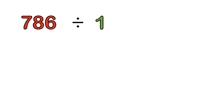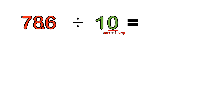Let's look at another example: 786 divided by 10. Step one, introduce the decimal point. Step two, one zero equals one jump to the left — so we move the decimal point one space to the left. The answer is 78.6. You can literally get all these answers in seconds.